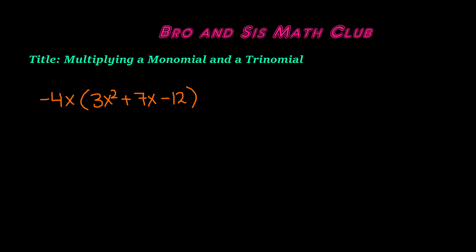What you basically do when you're multiplying a monomial and a trinomial is distribute the monomial to each of the terms in the trinomial. That's why I have the parentheses around the trinomial — because whenever you have parentheses around terms, that means you're multiplying.